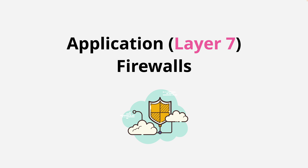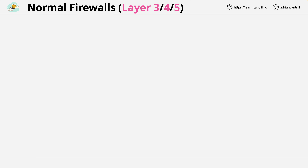Welcome back. In this video I want to talk in general about application layer firewalls, also known as layer 7 firewalls, named after the layer of the OSI model that they operate at. I want to keep this video pretty generic and talk about how AWS implements this within their product set in a separate video, so let's jump in and get started.